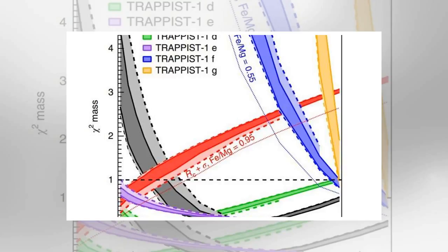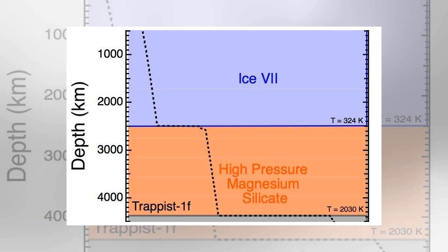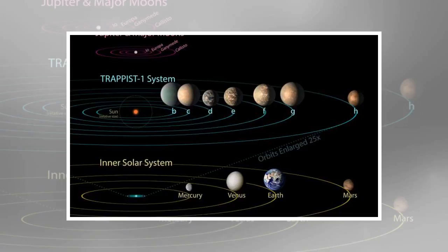The researchers with this new effort have thrown a wet blanket on such speculation by suggesting that all of the planets have too much water to support life. In modeling the planets, the researchers found that they all have far more water than Earth, from 50% of their mass to 10%.